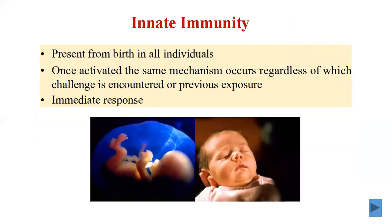Vaccines boost our immune system. Our immunity is of two types: innate immunity and acquired immunity. Innate immunity is present from birth and is inherited from the mother. Once activated, the same mechanism occurs regardless of which challenge is encountered or previous exposure. The response is immediate. The innate immune system represents a first line of host defense against pathogens that surmount the body's physical and chemical barriers such as skin, ciliated epithelium, mucous membranes, stomach acids, and digestive enzymes.